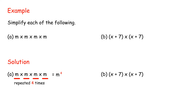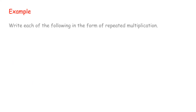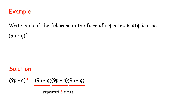Example: b times (x plus 7) times (x plus 7) equals (x plus 7) squared. Write each of the following in the form of repeated multiplication. Solution: (9p minus q) cubed equals (9p minus q) times (9p minus q) times (9p minus q).